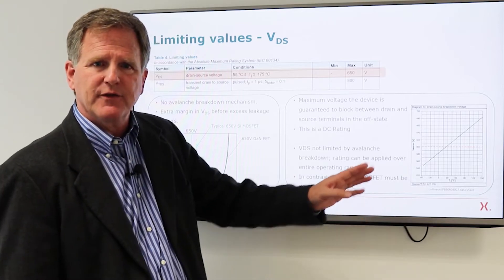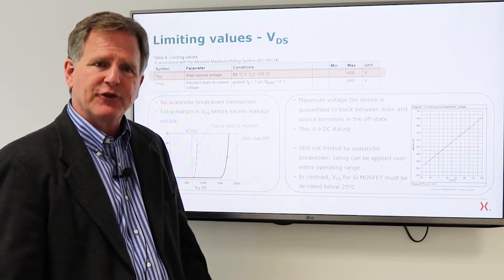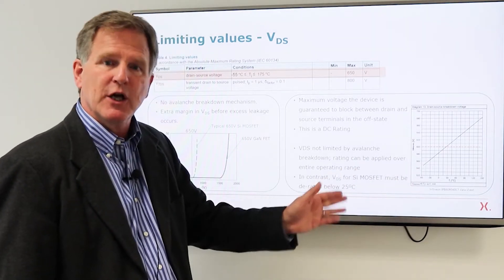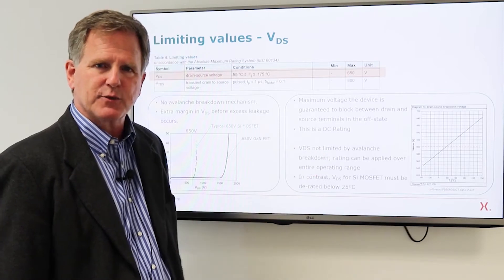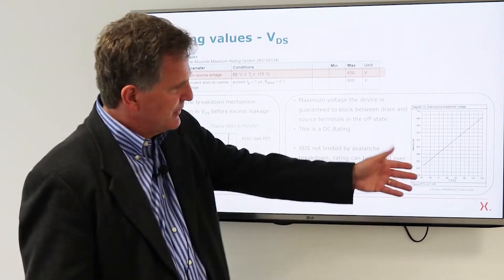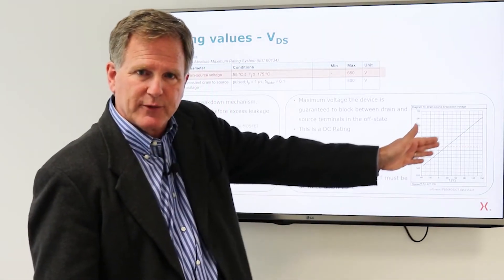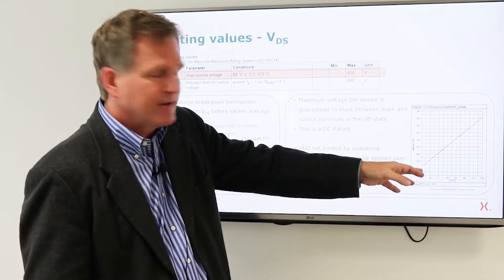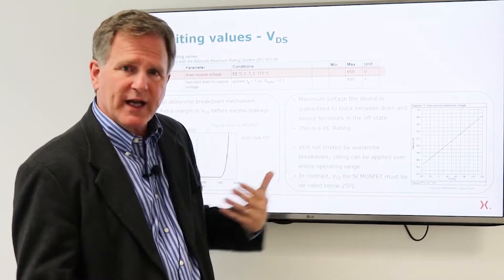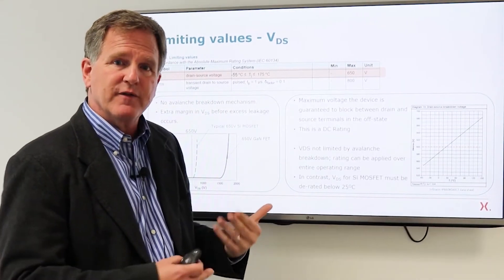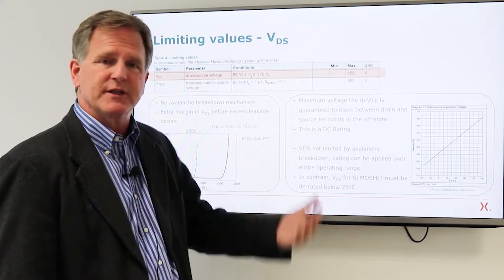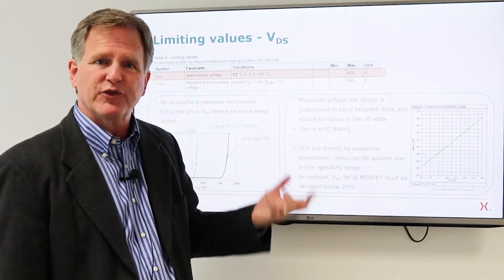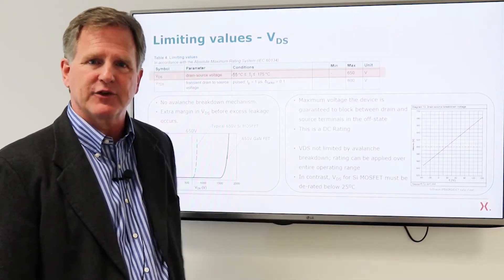One other aspect the avalanche mechanism has a temperature coefficient and the convention is that below 25 degrees C you derate the VDS rating. And this is a typical data sheet shows you this graph and this is just the convention acknowledging the physics of avalanche breakdown. Well since we have no avalanche breakdown our VDS rating applies over the entire temperature range. So minus 55 to plus 125, 650 volts is the DC rating of this device.